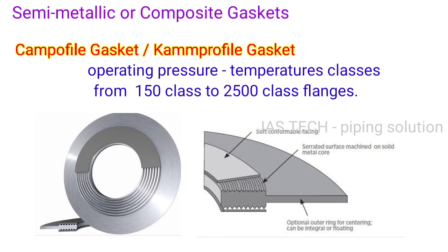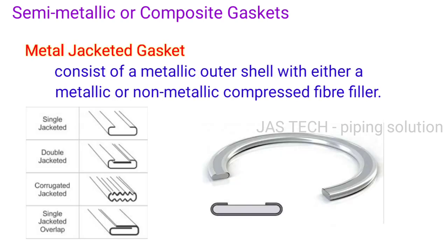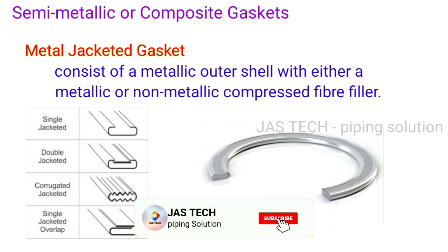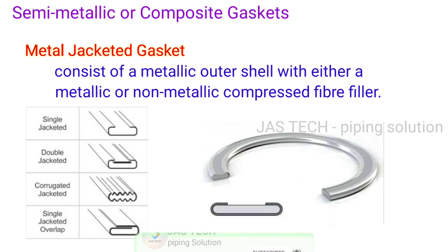Semi-metallic or composite gasket: Spiral wound gasket, operating from pressure-temperature Class 150 to Class 2500 flanges. Metal jacketed gasket consists of a metallic outer shell with either a metallic or non-metallic compressed fiber filler. There are four types: single jacketed, double jacketed, corrugated jacketed, and single jacketed overlap.